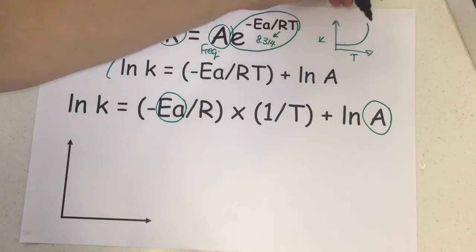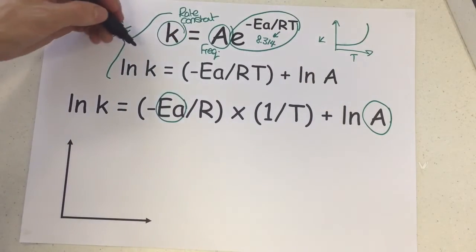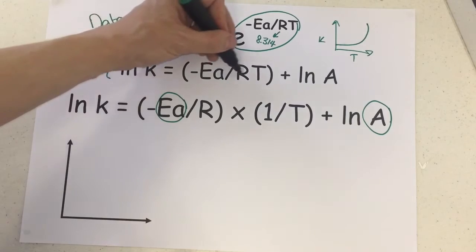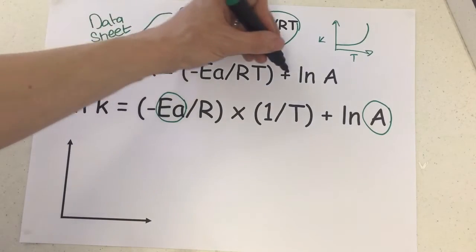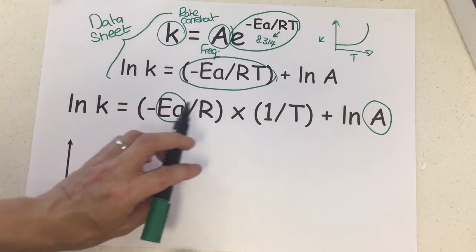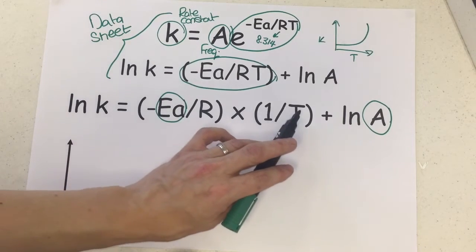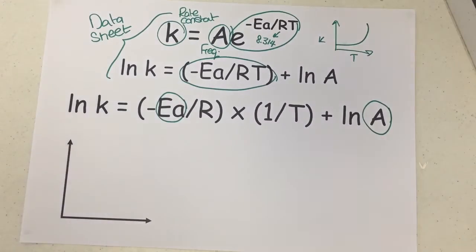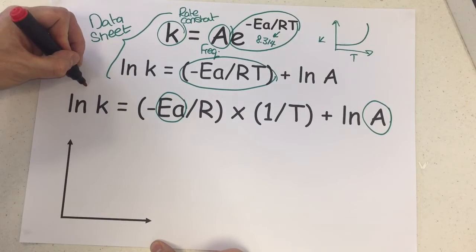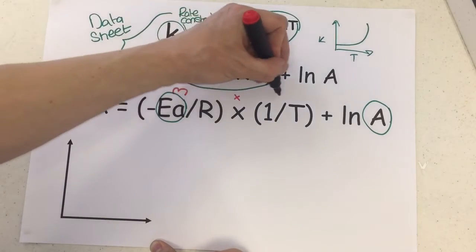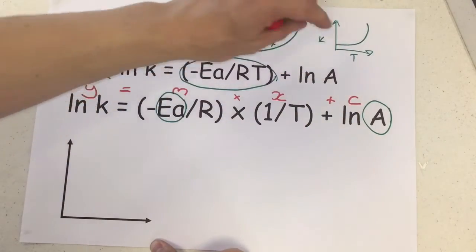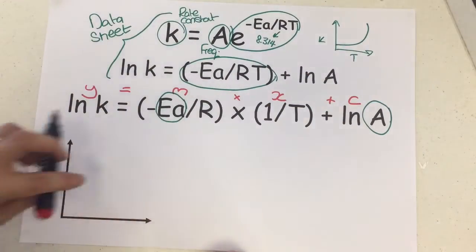Now to get rid of the exponential, you can take a natural log of both sides. We've now got ln k equals minus Ea divided by RT, which is no longer in this exponential, plus ln A. I've expanded this term so I've now got minus Ea divided by R times 1 over T. This version you won't be given in the exam, but the important thing is we've now actually got y equals mx plus c. So now we've got the equation for a straight line, and we can plot a straight line graph.